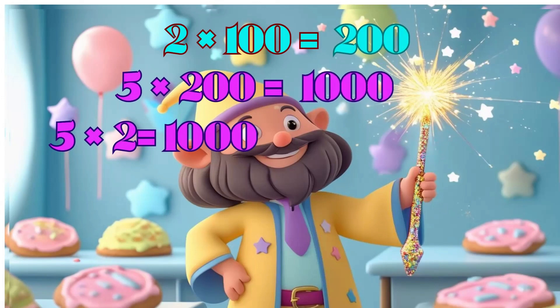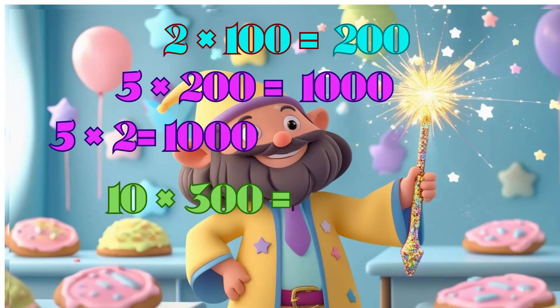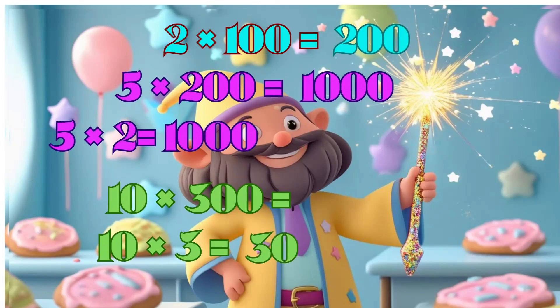Now let's see the third one. 10 multiplied by 300 equals — yes, 10 multiplied by 3 is equal to 30, add two zeros equals 3000.